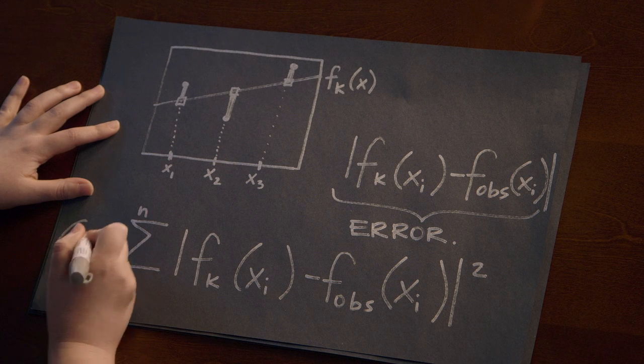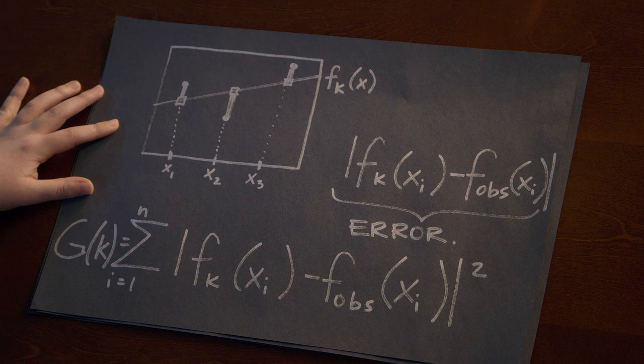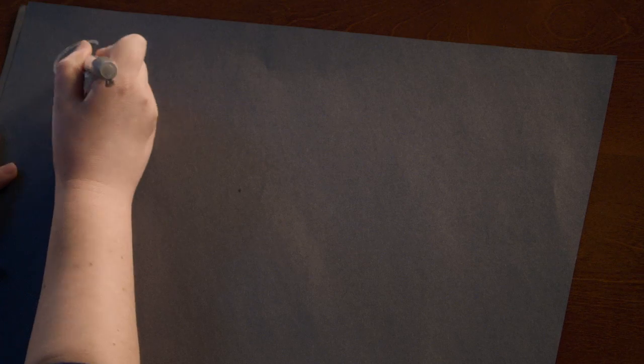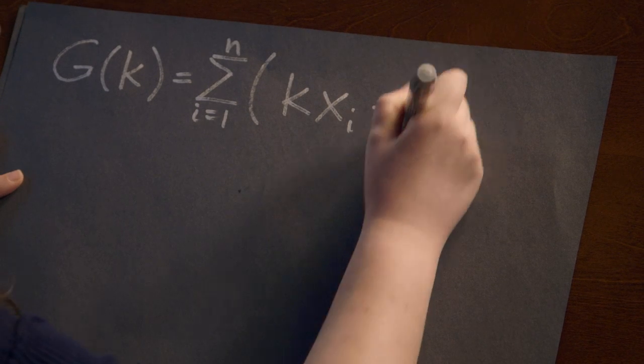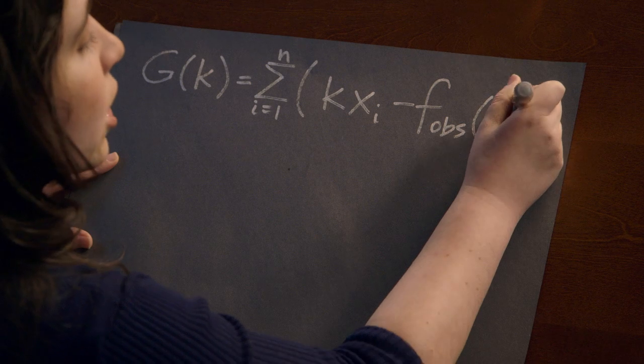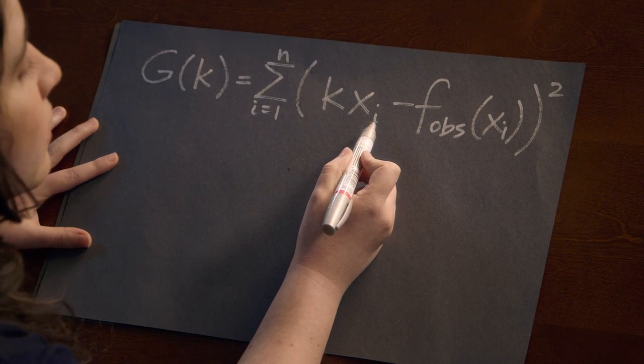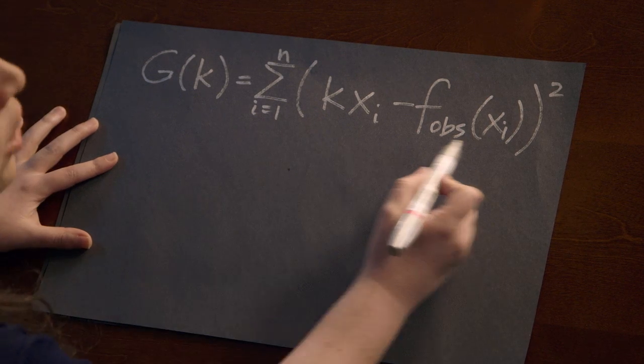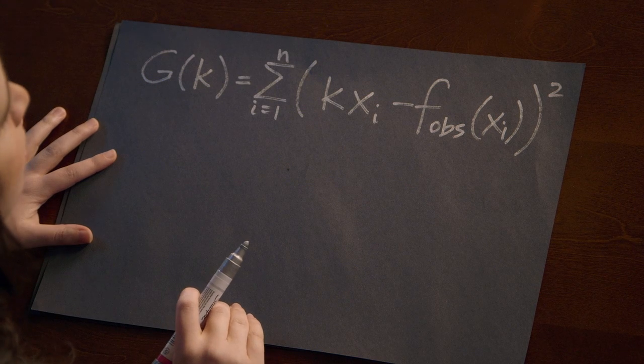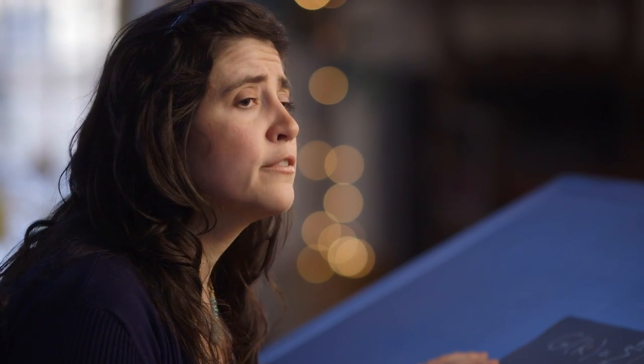Now that the x_i are fixed actual data values, what we're getting is a function that depends on our choice of parameter K — the error function. In the case of a single automobile, since the model is linear in K, this term will be quadratic in K, so the sum is also quadratic in K. All we have to do is take the derivative of this quadratic function, set the derivative equal to zero, and solve for K. That gives us the minimizer — the best possible value of the parameter to fit the observed data. This is a really simple model, and it wasn't that hard to find the best value of K.